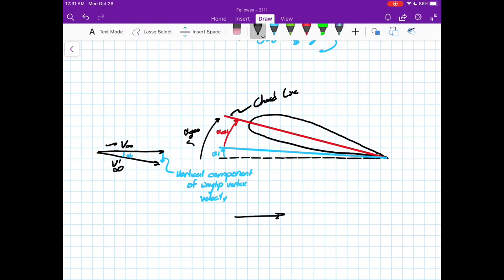Essentially what you can imagine is if you have some original velocity V infinity original, and then you have a vortex coming down on top of it, you end up with this vertical component to it which just dips your V infinity down just a little bit. So you have this new effective V infinity, which I'll call V infinity prime.